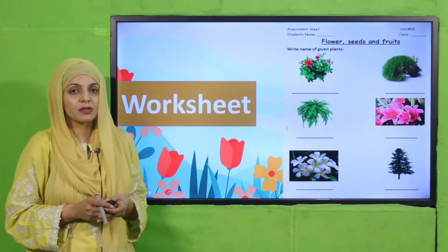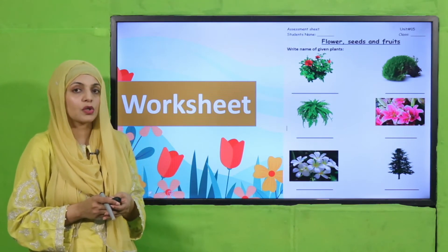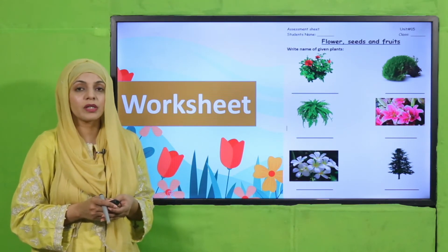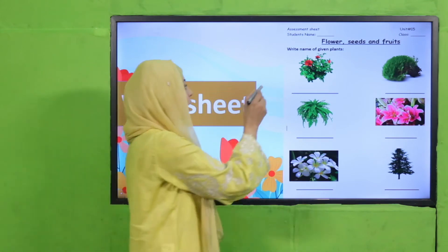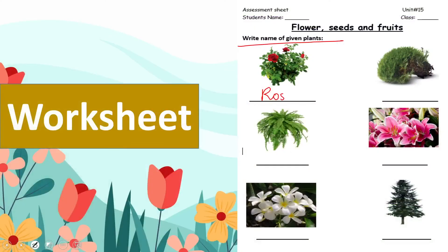Now let's move forward towards the practice. You can download this worksheet from the description box below this video, or get it in print form from your teacher. Write down your name and class at the top, then write the name of the given plant. The plants shown are: rose, moss, fern, lily, jasmine, and pine.